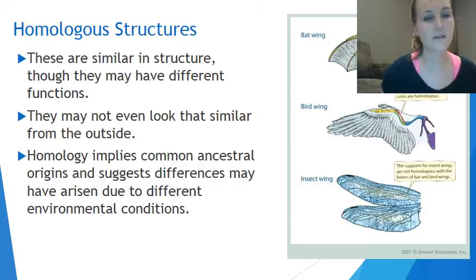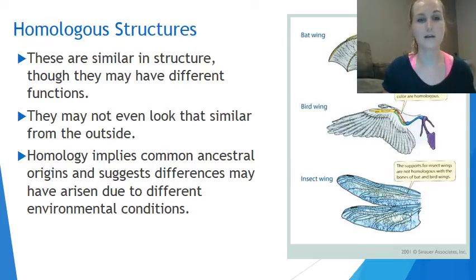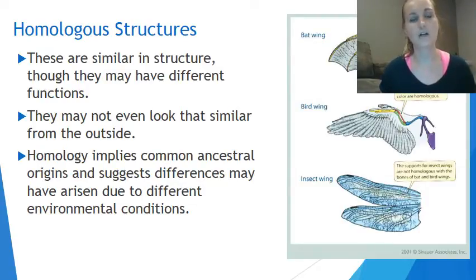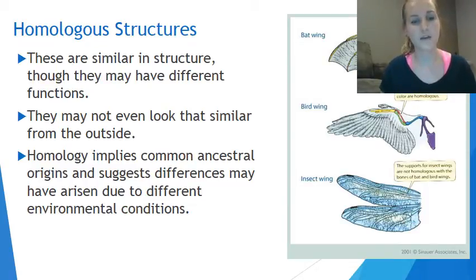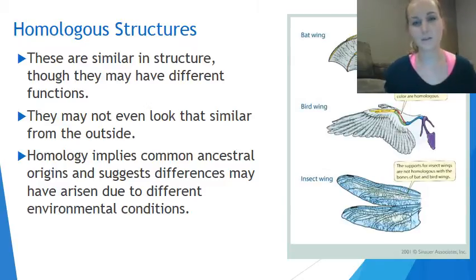Homologous structures are similar in structure, though they may have different functions and may not even look that similar from the outside. 'Homo' means the same, so homologous means same structure — that's the important thing. If they have a similar structure, this implies common ancestral origins, meaning they developed from one previous ancestor.